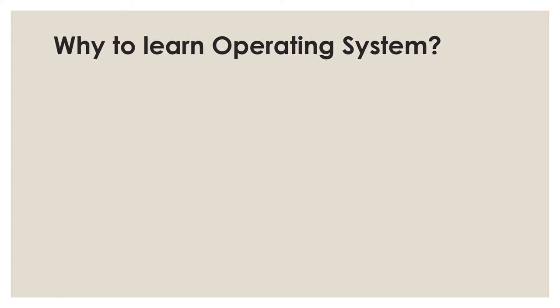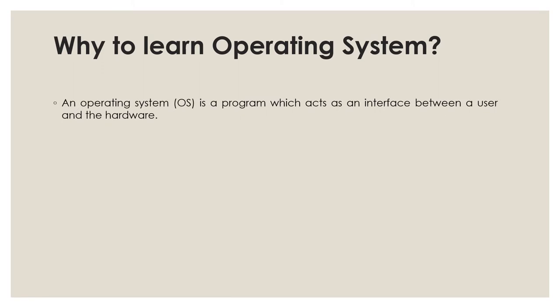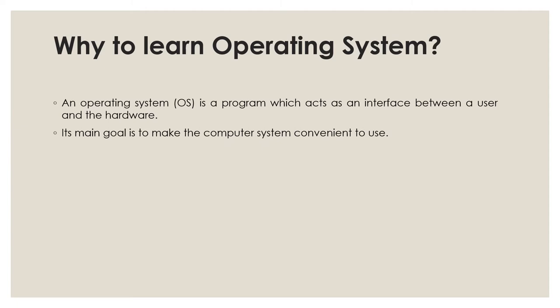Now, why learn operating system? In a computer system that comprises both hardware and software, the hardware can only understand machine code, meaning in the form of 0s and 1s. So we need a system which can act as an intermediary and manage all the processes and resources present in the system. Thus, an operating system is a program which acts as an interface between a user and the hardware, controlling all components of the computer system.